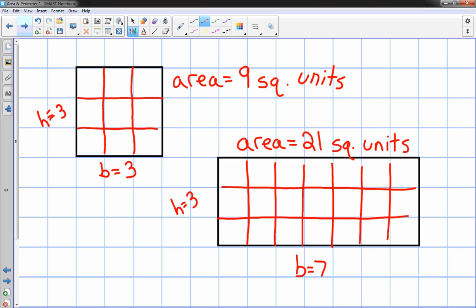Hopefully as students practice this, they're going to realize it's really just the base times the height for rectangles. So in this case it was 7 times 3 is 21, and for the square it was just 3 times 3 is 9.